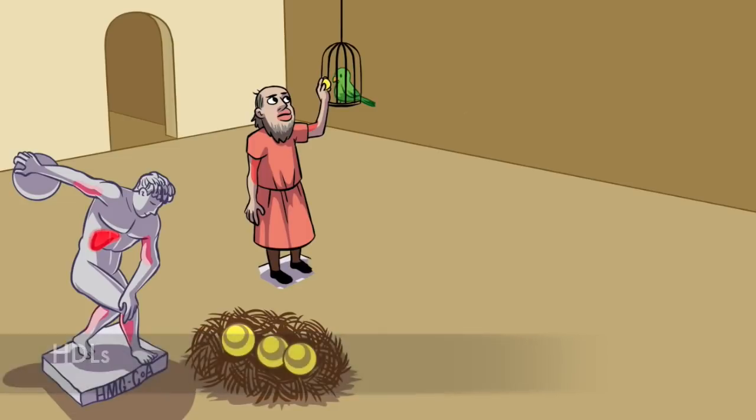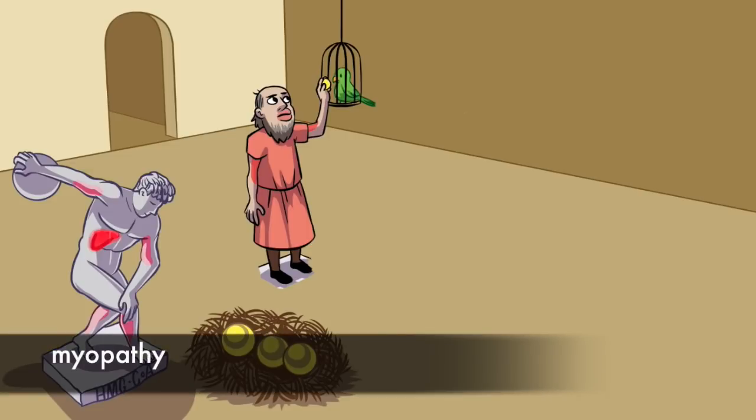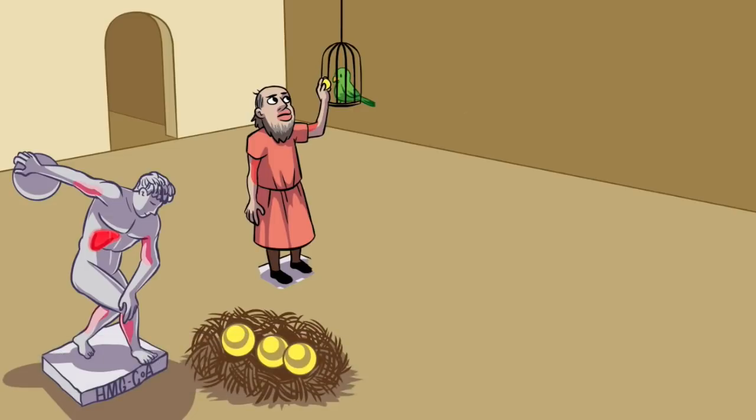Like statins, fibrates can also have the side effect of myopathy, which is why this artist has wimpy, red, inflamed muscles like the statue. When you have a patient on both statins and fibrates, expect muscle pain. This artist is also standing on a stone platform to represent a second notable side effect of fibrates, gallstones.